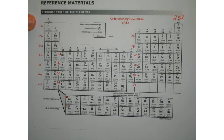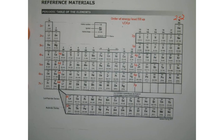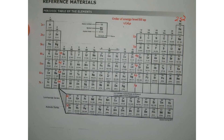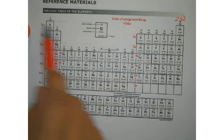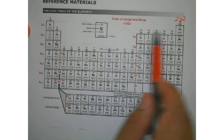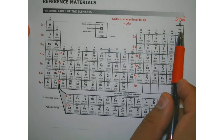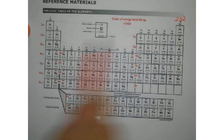Now let's look at energy levels. Here's your first energy level, second energy level, third energy level, fourth energy level, fifth, sixth, and seventh. Since we're reading the periodic table from left to right, the first row is our first energy level, the second row is the second energy level, and so on down to the seventh energy level.